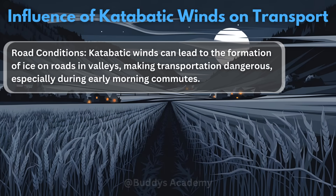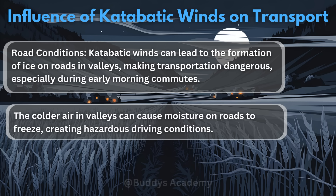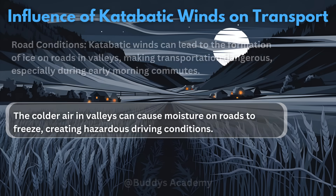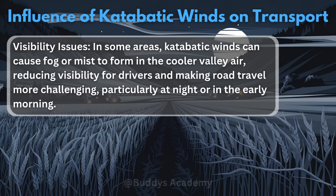Now we are looking at the influence of katabatic winds on transport. The first would be road conditions. Katabatic winds can lead to the formation of ice on roads in valleys, making transportation dangerous, especially during early morning commutes. The colder air in valleys can cause moisture on roads to freeze, creating hazardous driving conditions — this can cause horrible accidents. Our next influence will be visibility issues. In some areas, katabatic winds can cause fog or mist to form in the cooler valley air, reducing visibility for drivers and making road travel even more challenging, particularly at night or in the early morning, leading to treacherous conditions on the road.